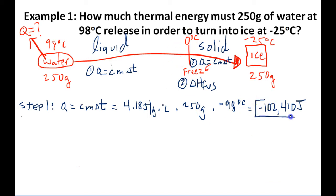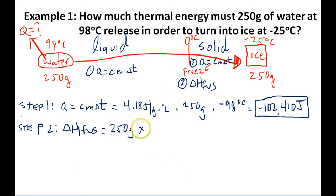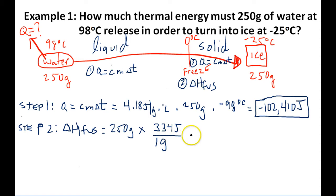Now in step two we need to calculate the heat of fusion. To get the heat of fusion, we take the mass of this water — 250 grams — times the heat of fusion for water, which is 334 joules per gram. Since the water is cooling off and freezing, the sign of the heat of fusion should be negative, and we end up with negative 83,500 joules. So this is the amount of energy it's going to take to just freeze the water.